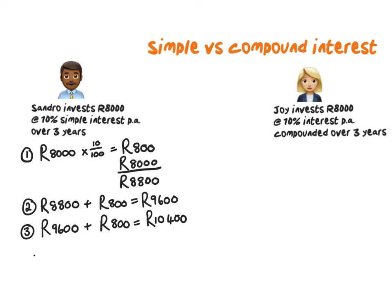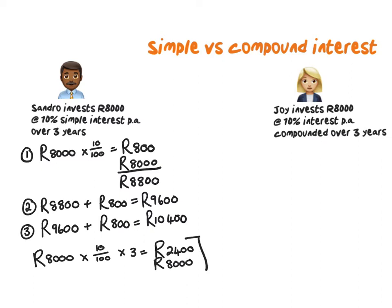The short way of doing this is by saying 8,000 times 10% times 3, because he gets the same amount every year for 3 years, and that gives me 2,400 Rand. If I add it on to his original investment, that also gives me 10,400 Rand. So that is simple interest.